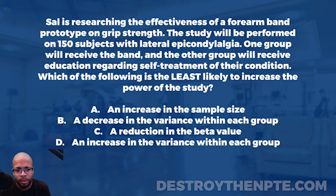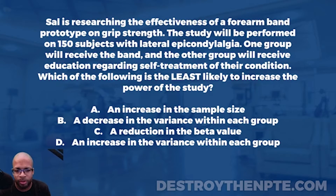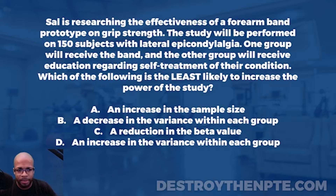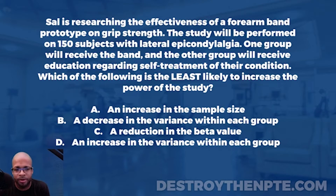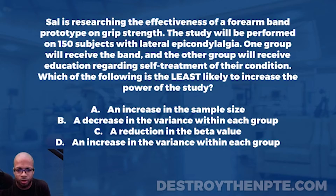One group will receive the band and the other group will receive education regarding self-treatment of their condition. We clearly have two groups — probably 75 subjects on each side. One group gets the band, the other only gets the education. Now, the question asks which of the following is the least likely to increase the power of the study.